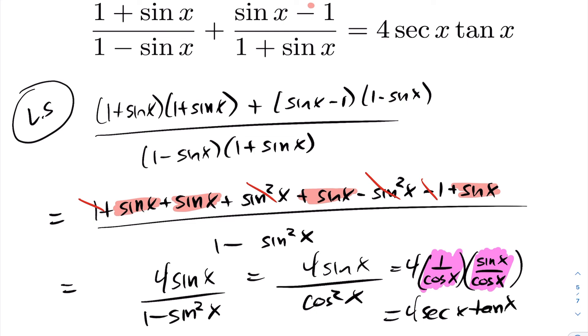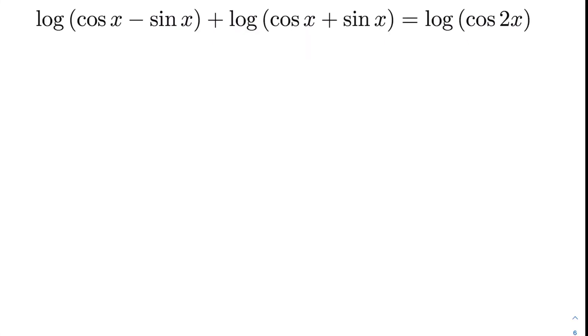Now we have 4 sin x / cos²x. Breaking this apart: sin x / cos x is tan x, and 1 / cos x is sec x. So this simplifies to 4 sec x tan x, which is exactly the right hand side.